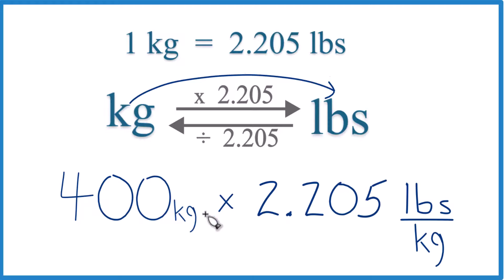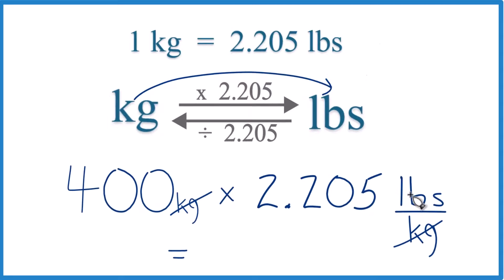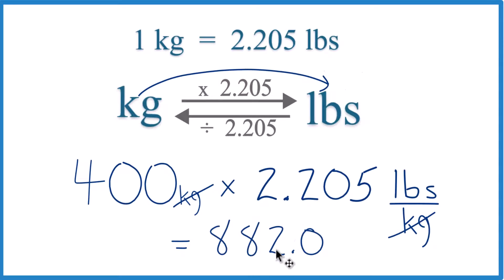Now when we multiply here, we have kilograms on the top and the bottom. They're going to cancel out. So 400 times 2.205 pounds equals 882.